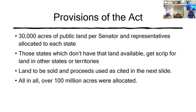MIT went through an elaboration as well. The ones that are absolutely land grant include Texas A&M, University of California, Penn State, and so forth.